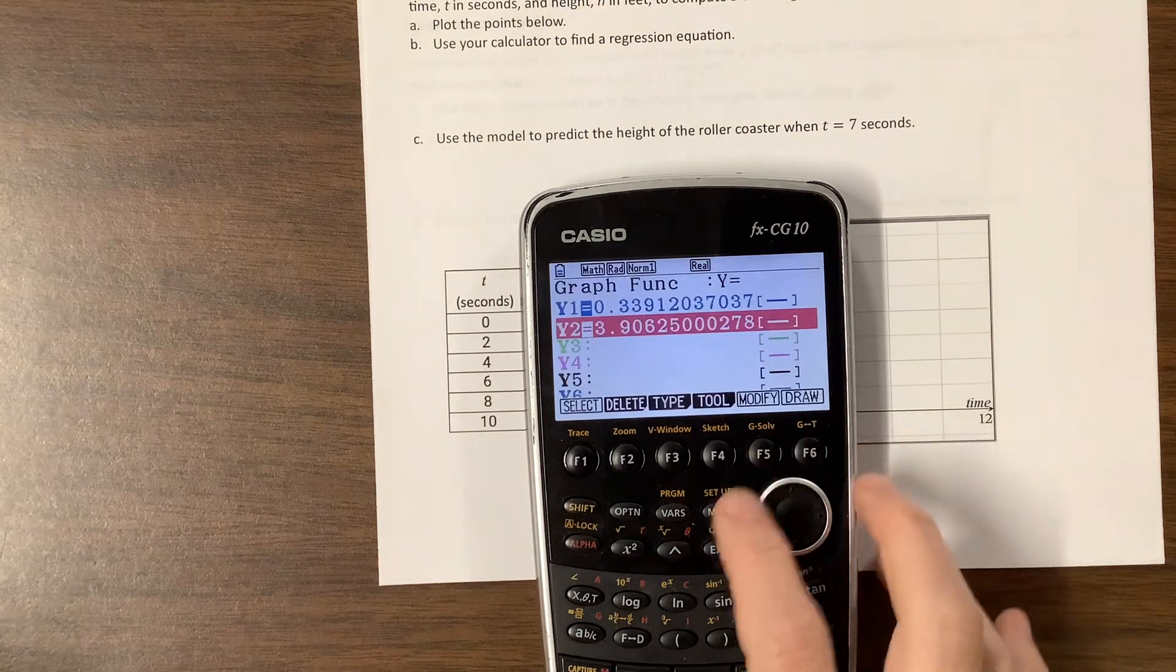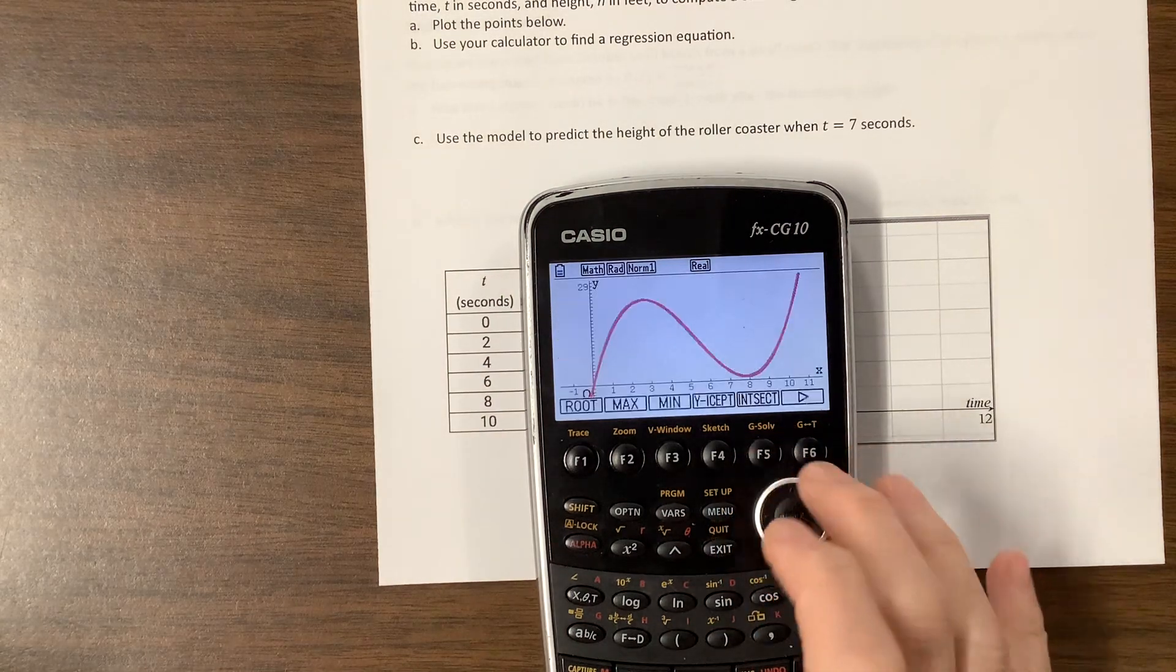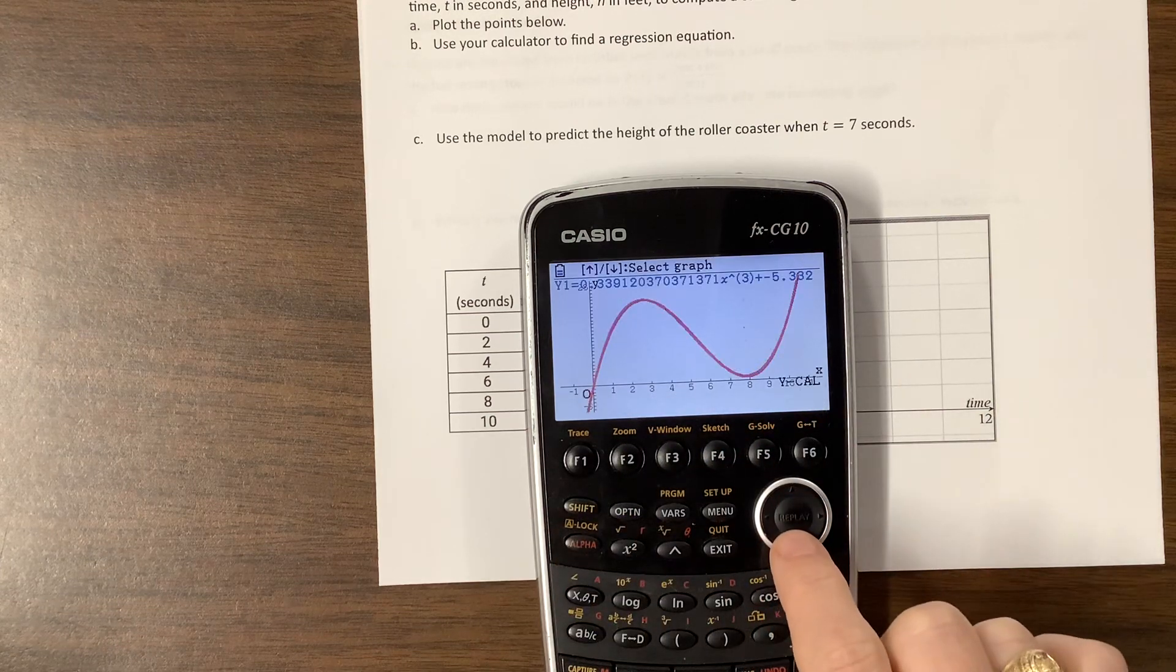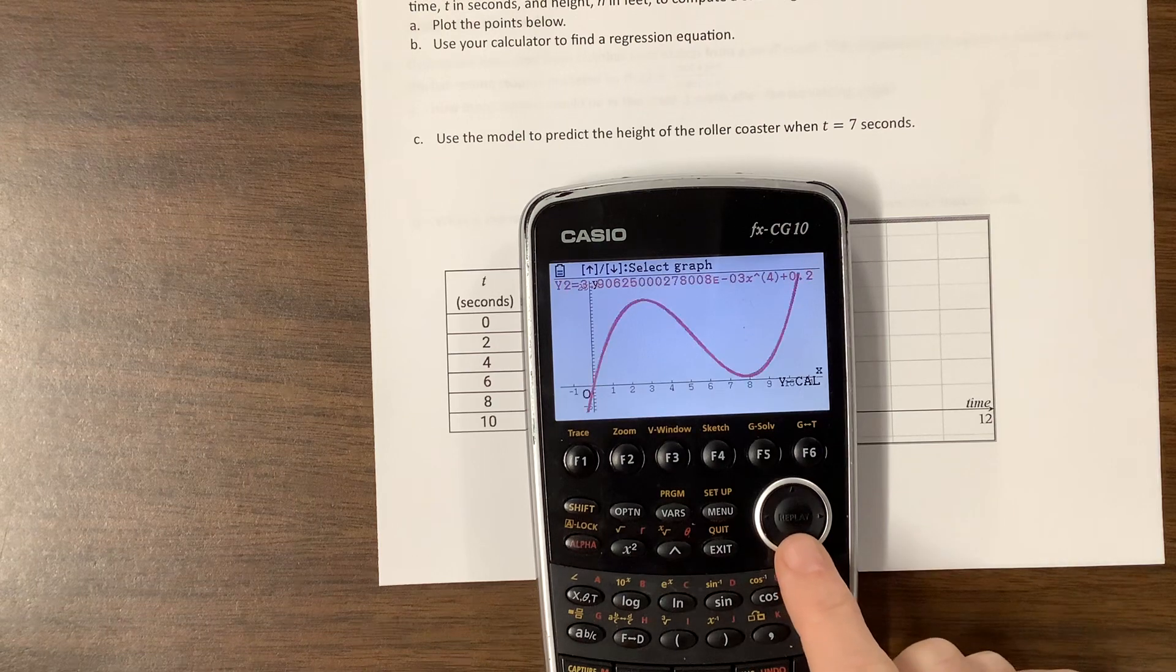I can do g-solve, come over, do the Y-cal. This time, I don't want to do that equation. I want to do the red one. So do you see? You can kind of tell that it's the red one that's highlighted.